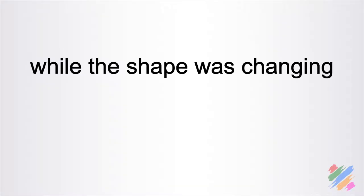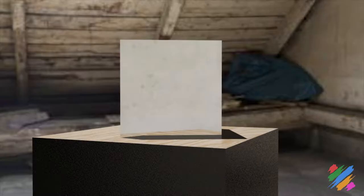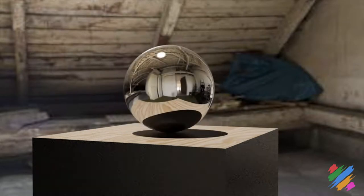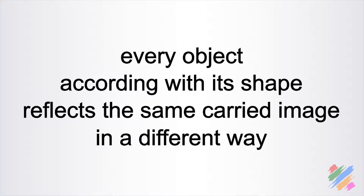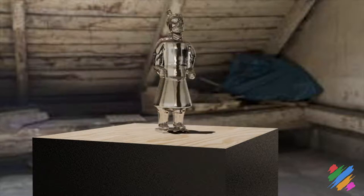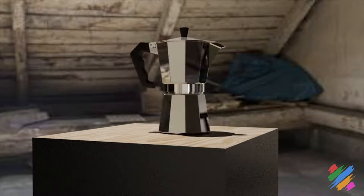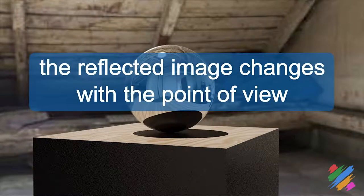So, while the shape was changing, the reflected image was changing as well, and it passed from a quite limited but realistic view to a much wider image but distorted by the shape of our sphere. Every object, according to its shape, reflects the same carried image in a different way. This is what we would see if, instead of a sphere, we set in the same place a teapot, or a statue, or a coffee maker of the same material. We also know that the reflected image changes with the point of view, so our object will reflect a different image for each different point of view.